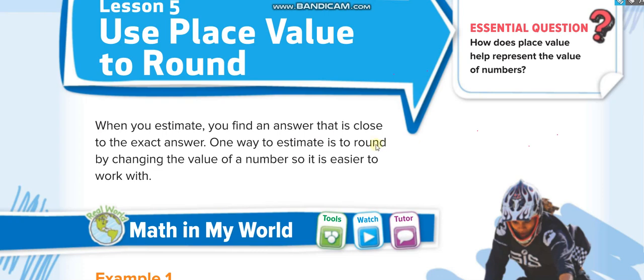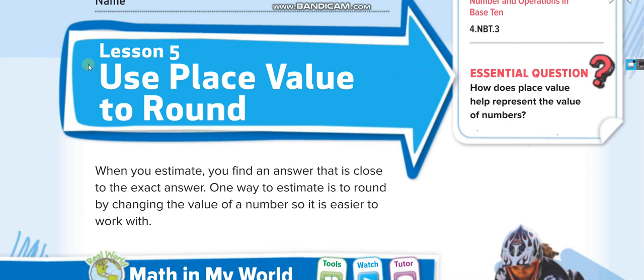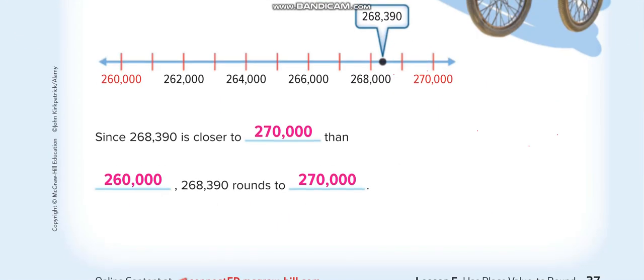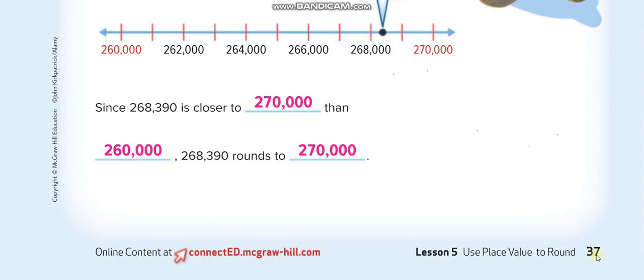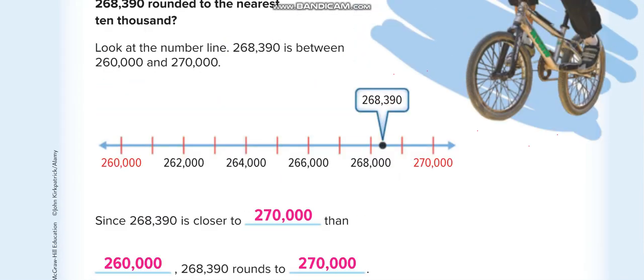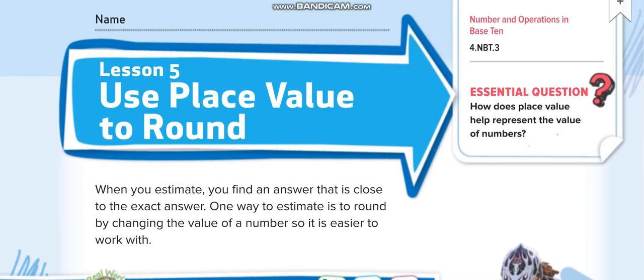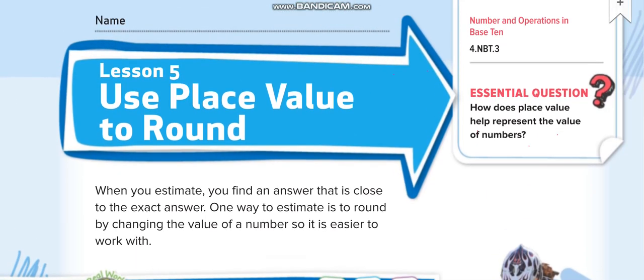Hey everyone, welcome back to another video lesson on my channel, Learn Math with Mr. Saad. Today's lesson is for Grade 4, Chapter 1, Lesson 5: Use Place Value to Round, page number 37. I hope all of you guys are ready with your books and pencils in hand. Let us start today's lesson.